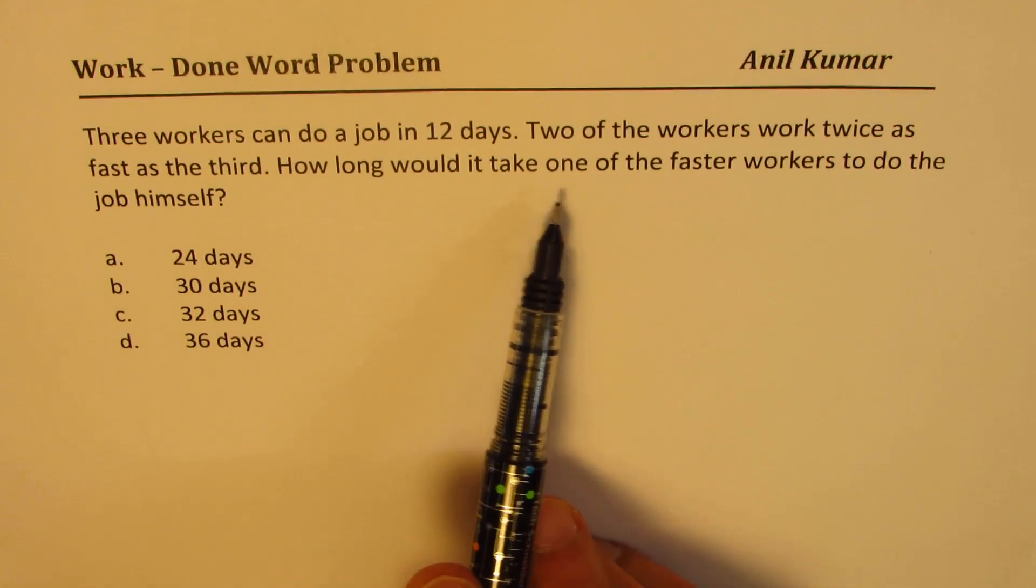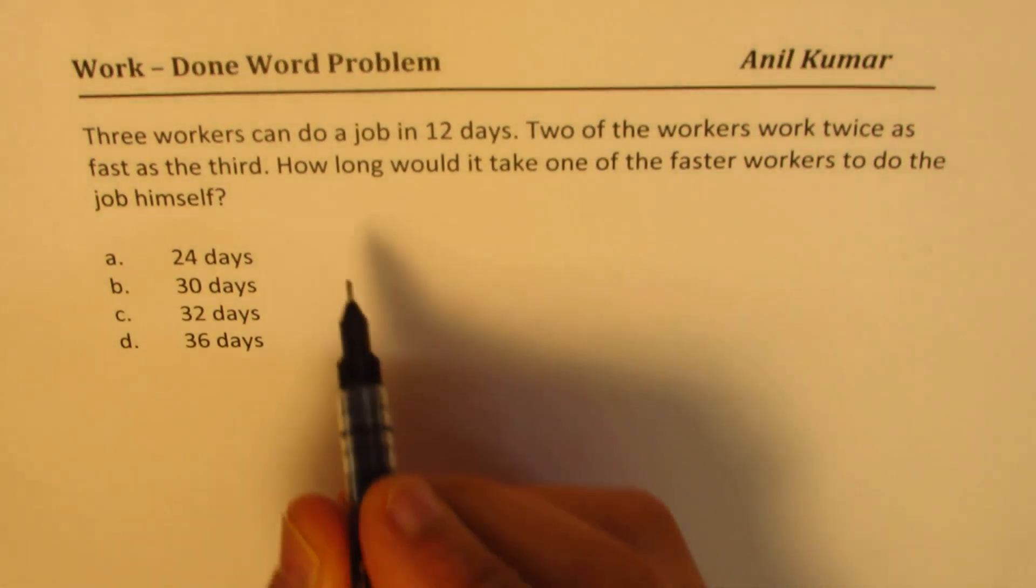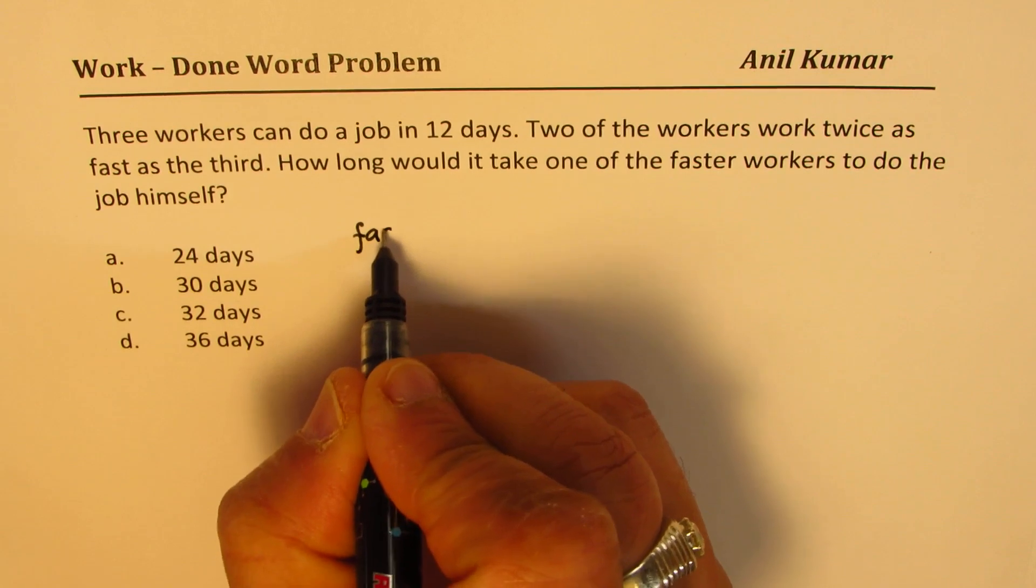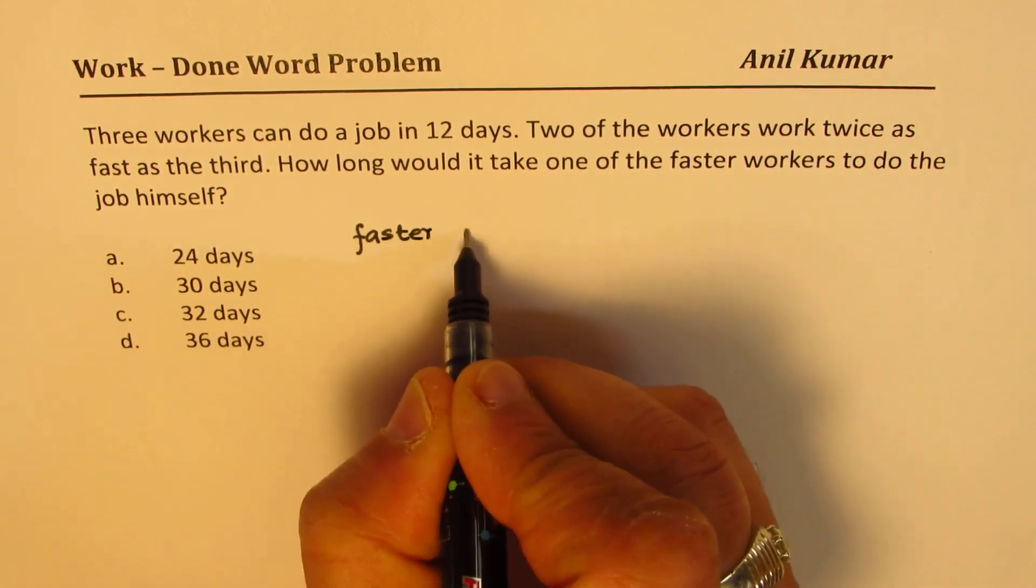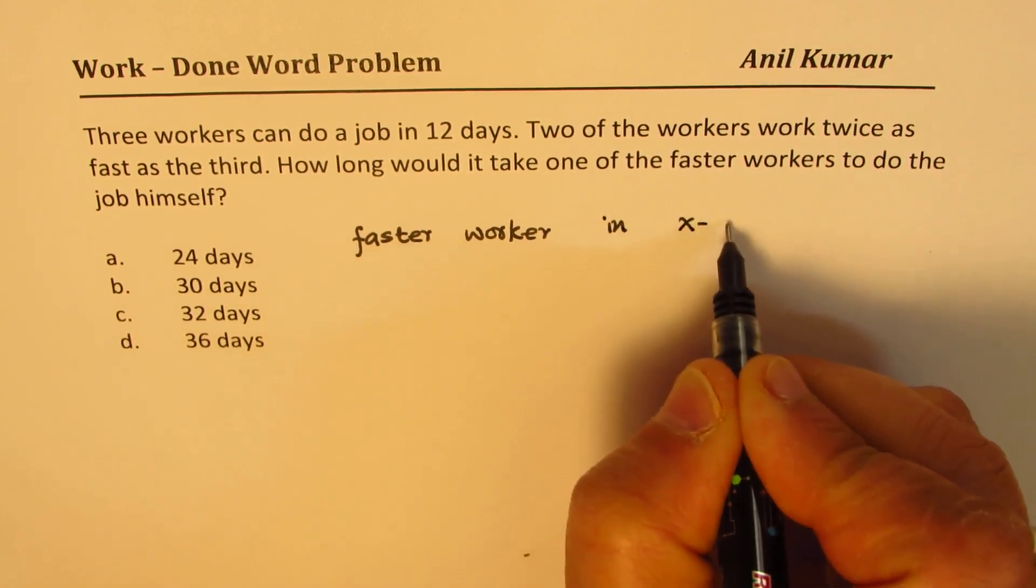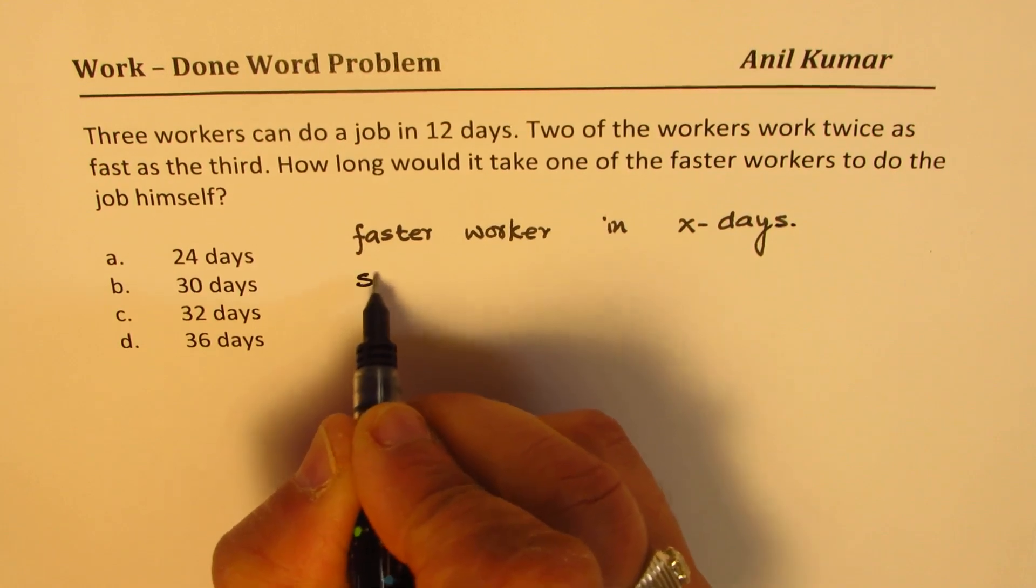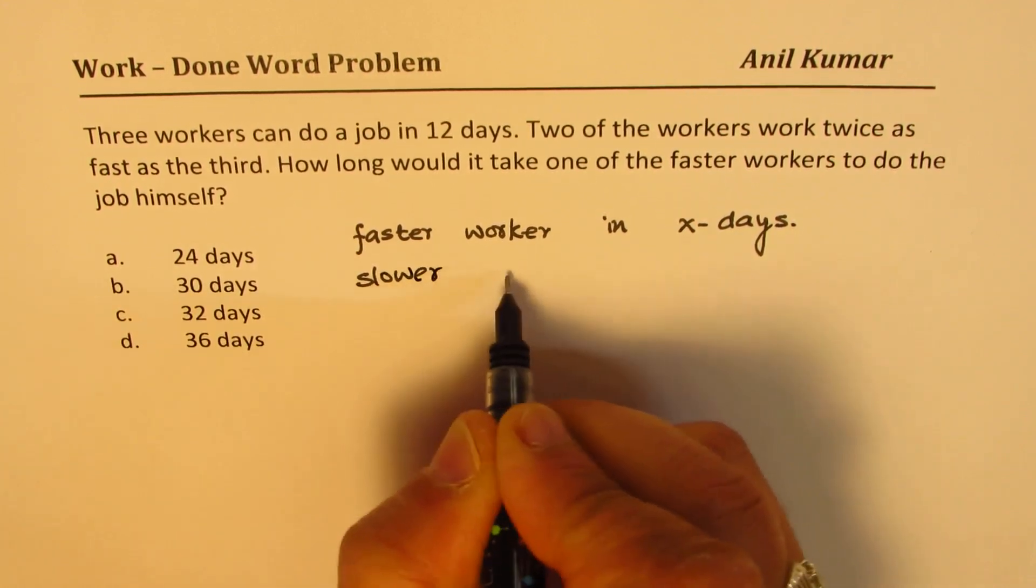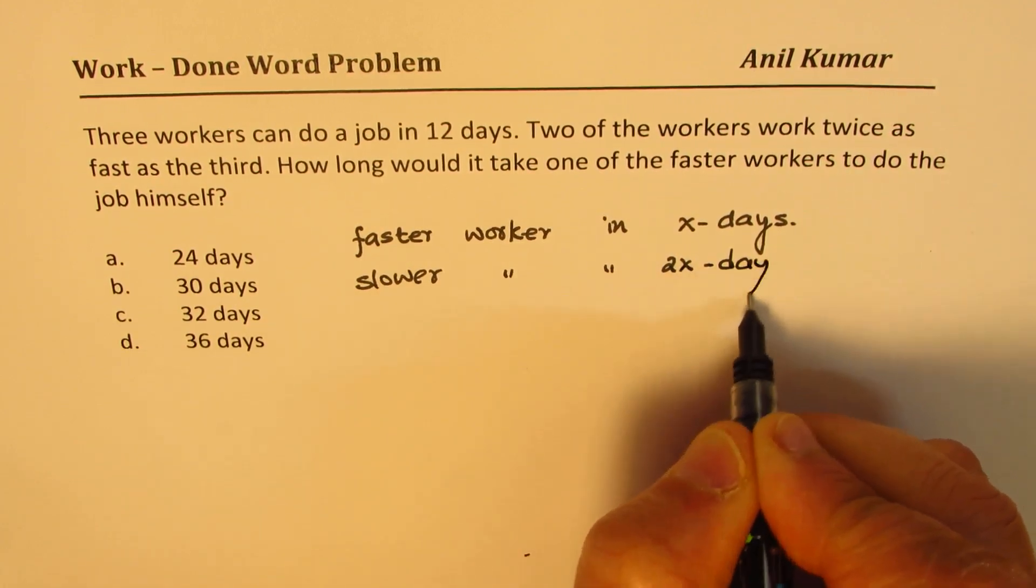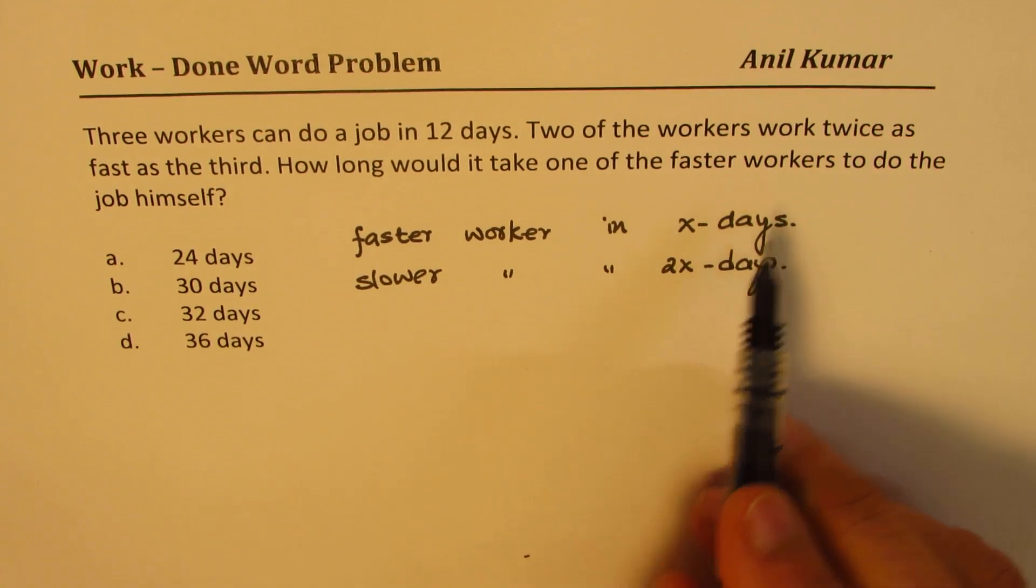Let's look into what we need to figure out. How long would it take one of the faster workers to do the job himself? Let's say X days. So faster workers in X days. Then the slower one will take how many days? 2X days, correct.